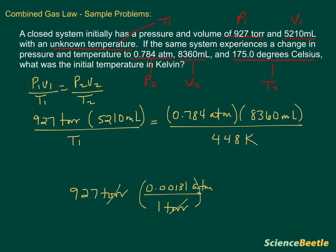Here the torr is going to cancel, and what we've got is our answer for atmospheres. So let me go ahead and do that. 927 times 0.00131 gives us the answer of 1.214 atmospheres. This number is what I'm going to go ahead and replace up top. Instead of doing 927 torr, we're going to replace it with the 1.214. So we'll do that here at the top and erase it, and here we go: 1.214 atmospheres.